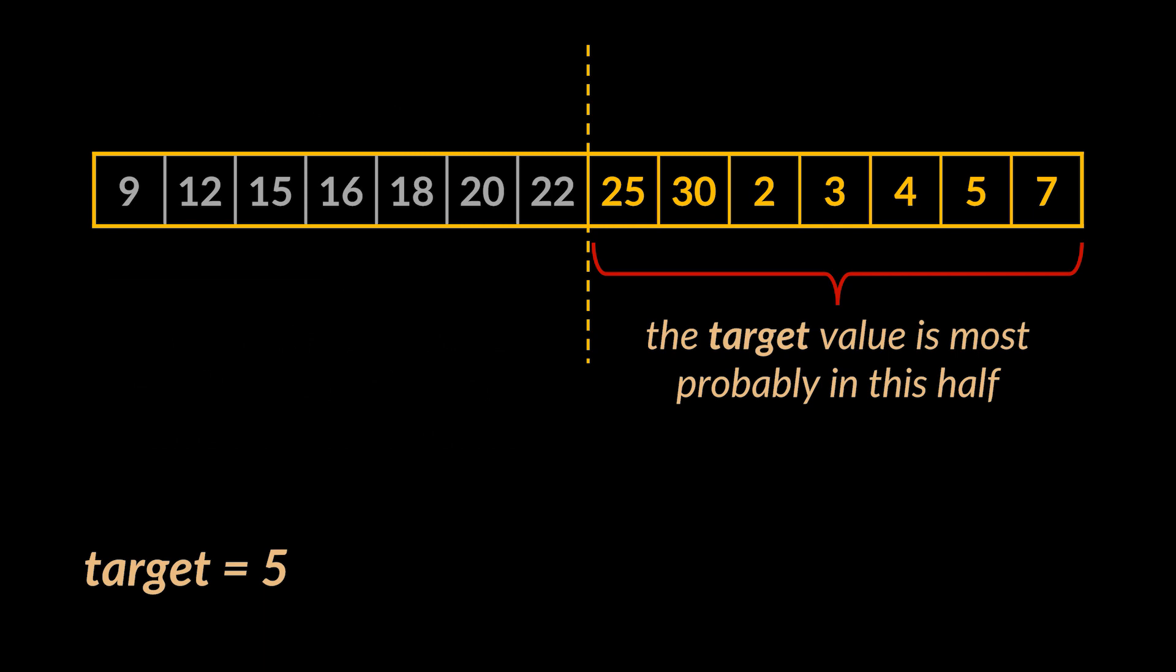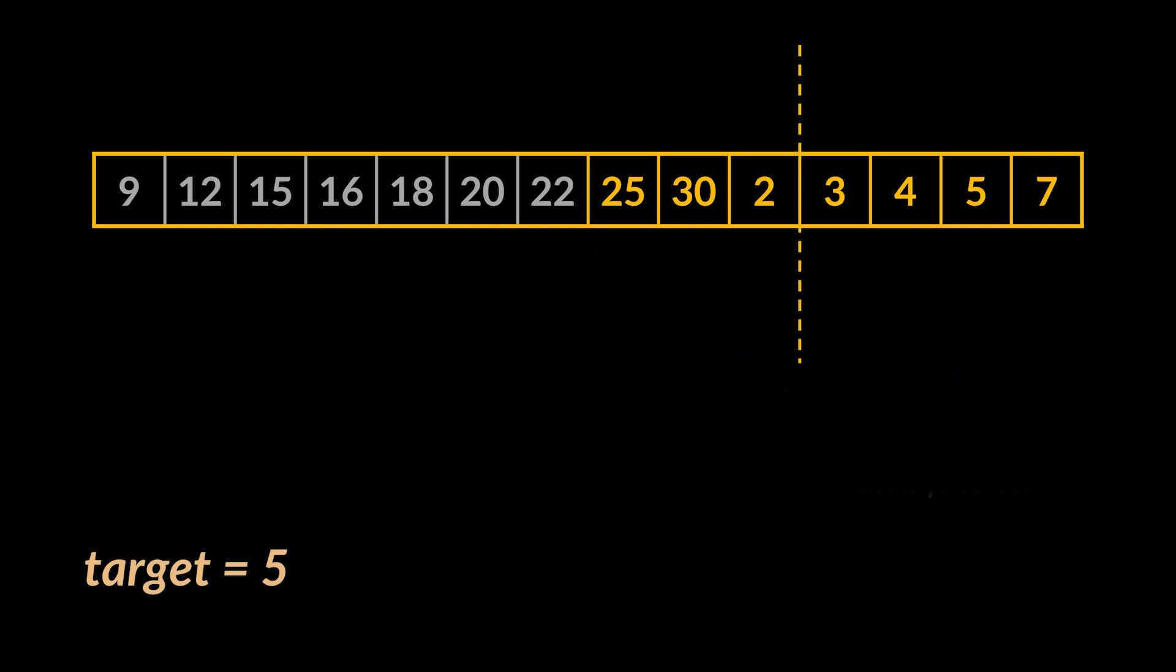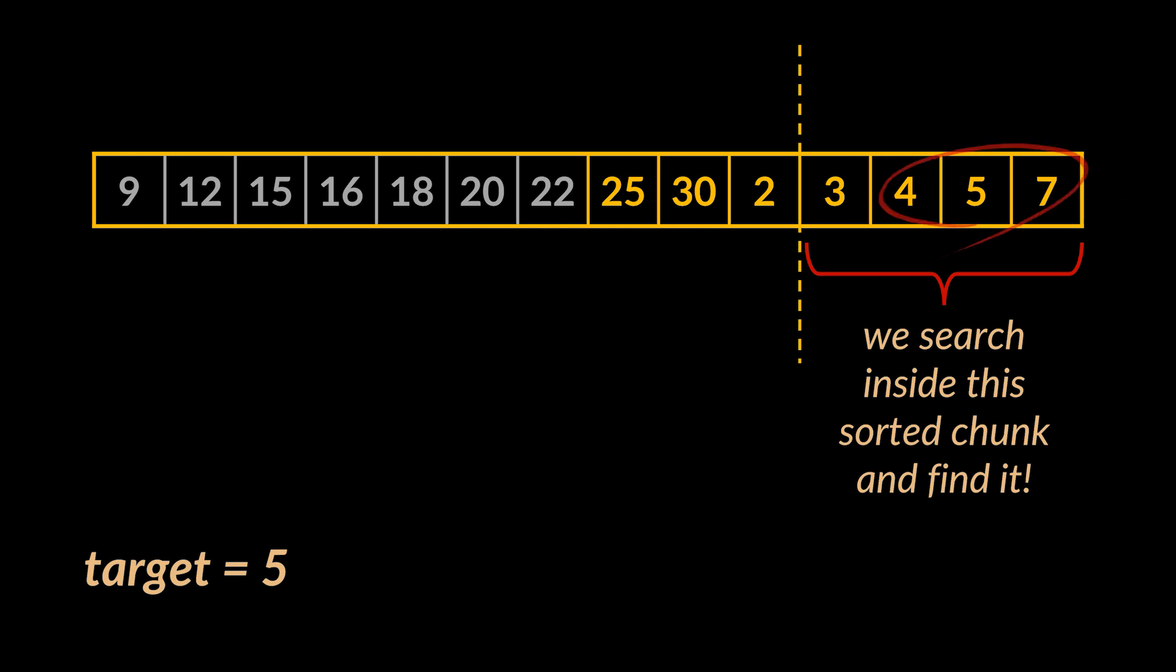If we find the target value then great. If not, we are now sure that it is most probably located in the second sub array. So we can go ahead and apply the same logic all over again on that sub array. Meaning, we slice this sub array into two, and after identifying which sub array is the sorted one, we binary search the target value inside it. That's it, we found the target we are looking for.